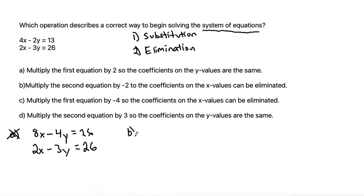Let's try letter B. It says to multiply the second equation by negative 2 so the coefficients on the x-values can be eliminated. If we multiply the second equation by negative 2, we get that to be negative 4x plus 6y is equal to negative 52.